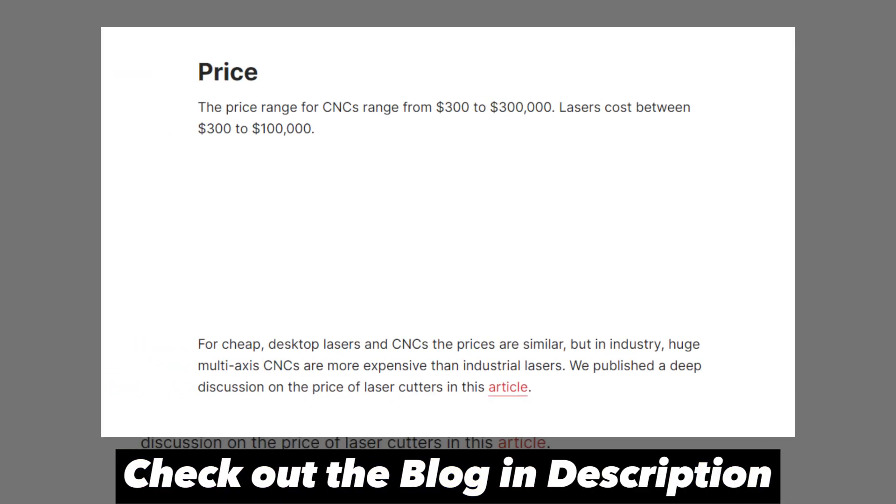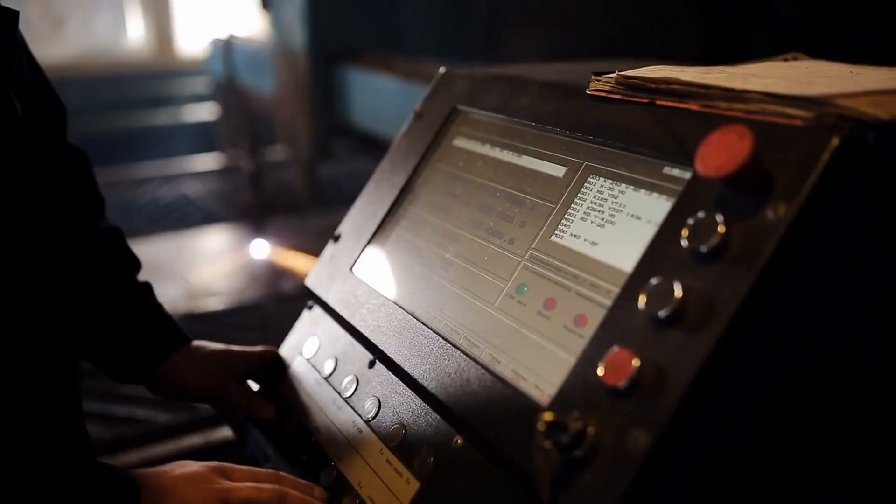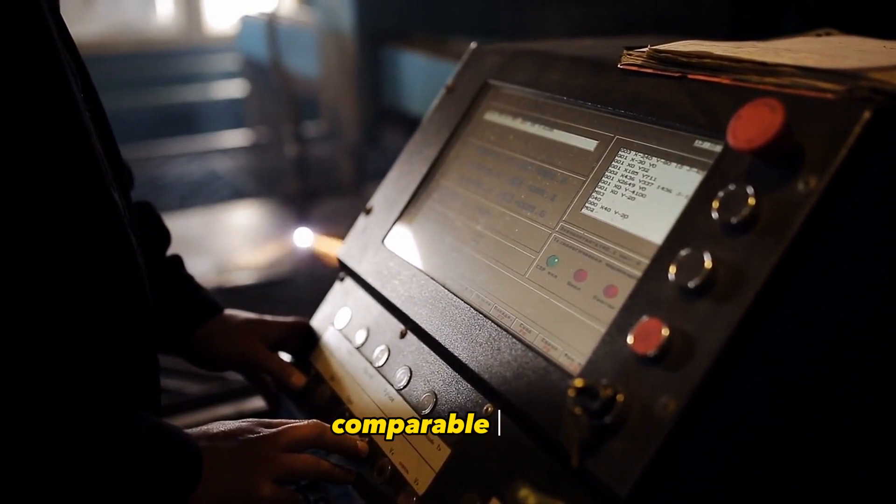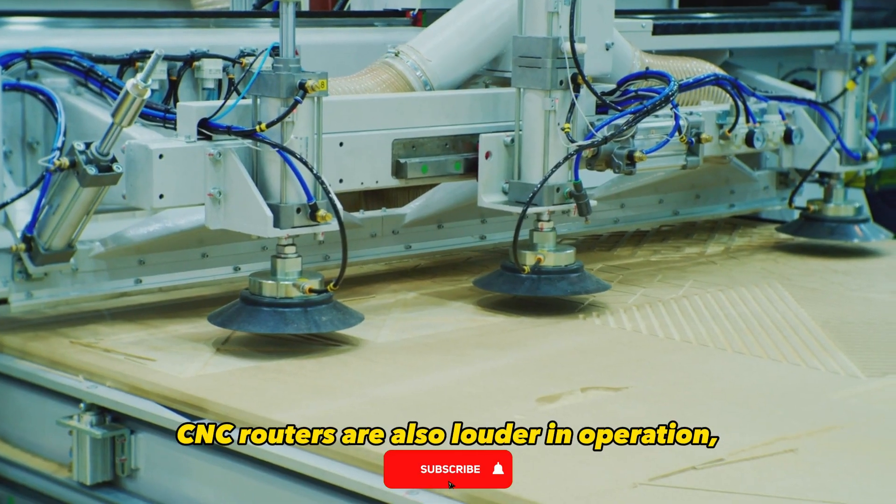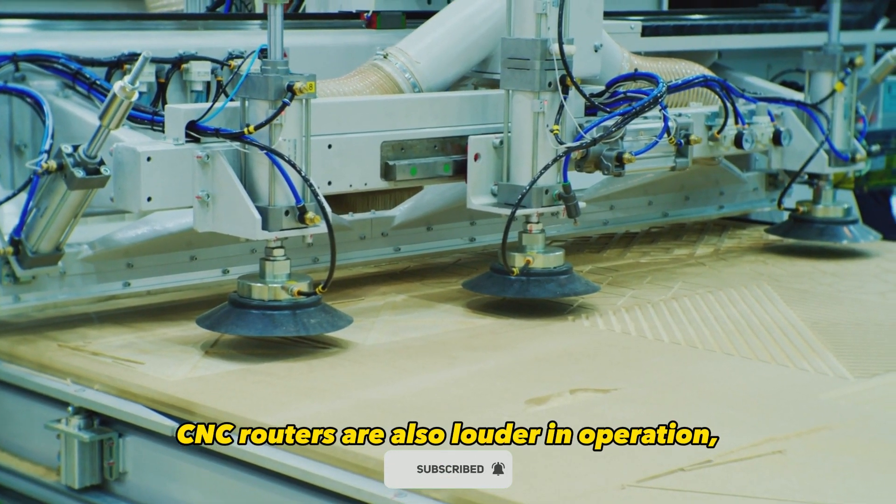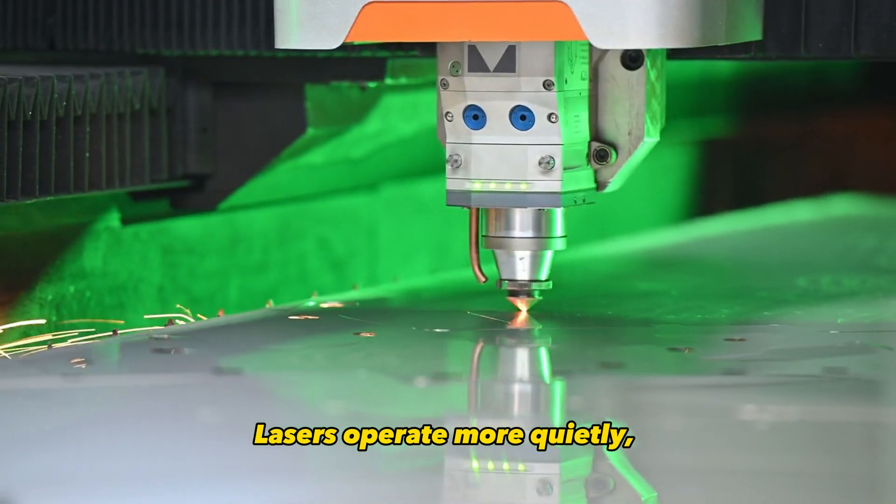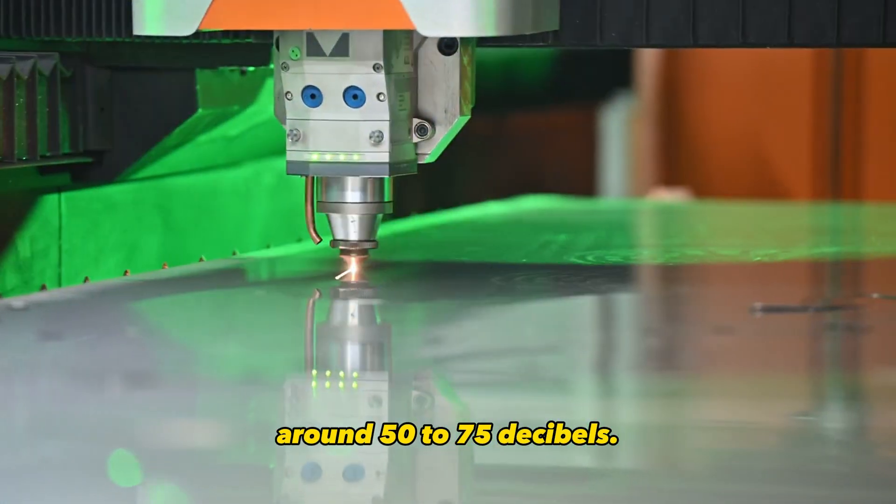Now for the cost. There's a wide range of prices for both tools. But industrial CNC routers run more expensive than industrial lasers of comparable size. CNC routers are also louder in operation, typically around 70 to 100 decibels. Lasers operate more quietly, around 50 to 75 decibels.